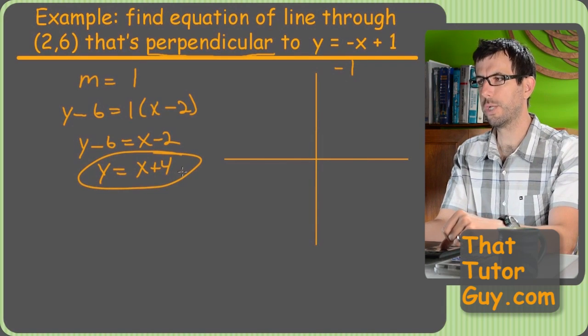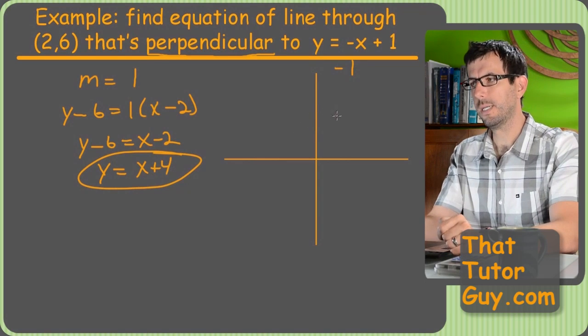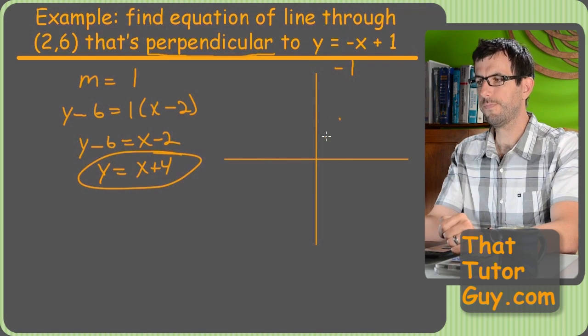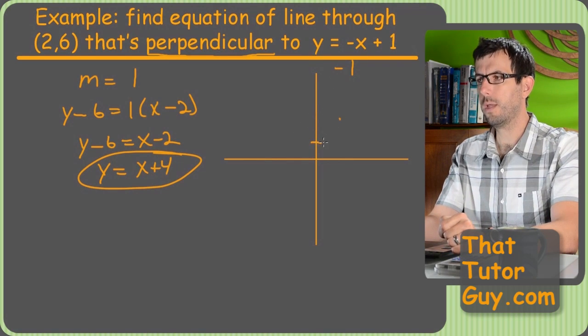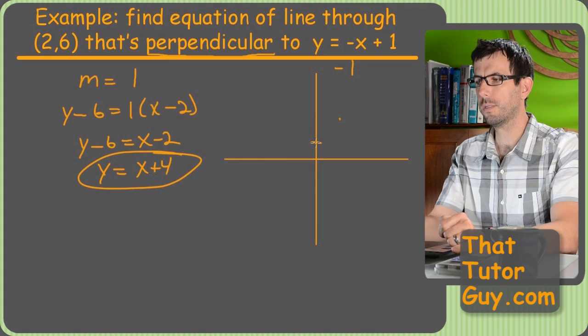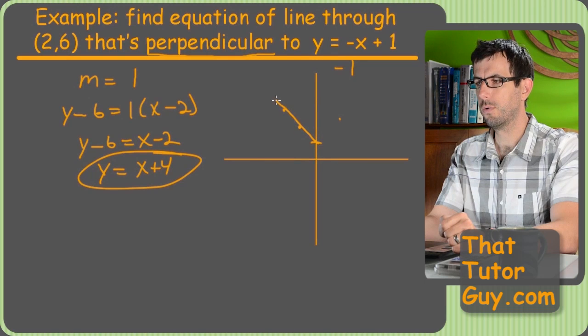Now, if you wanted to double check your work, you could plot both of these. This first equation had a y-intercept of one, and then a slope of negative one, which is up one, left one, up one, left one.